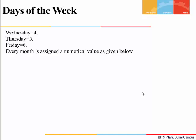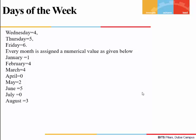The months also have numerical codes: January = 1, February = 4, March = 4, April = 0, May = 2, June = 5, July = 0, August = 3, September = 6, October = 1, November = 4, and December = 6.